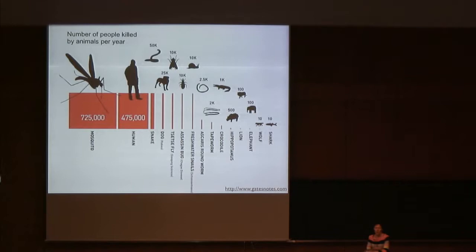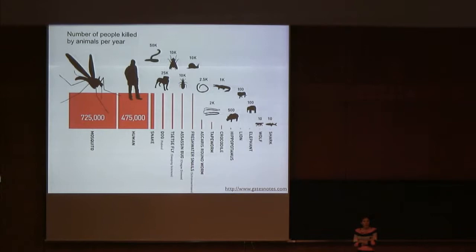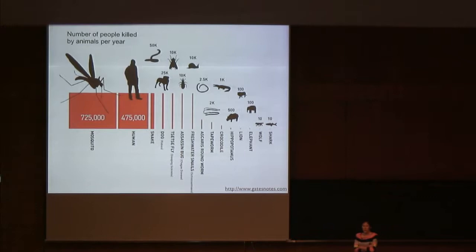Mosquito bites are actually the most dangerous interactions we can have with any animal on the planet, including with ourselves. Mosquito bites cause diseases that kill almost a million people every year. It's really hard for us in the developed world to conceptualize how dangerous a mosquito bite can be, although that's changing — if you're a pregnant woman in South Florida right now, you're terrified of getting a mosquito bite, and for good reason.